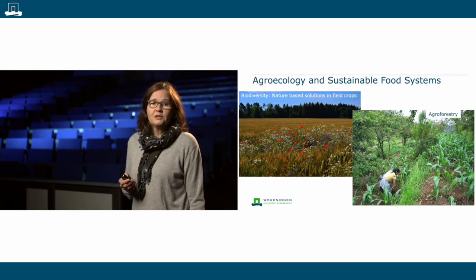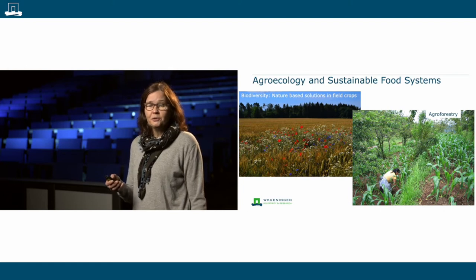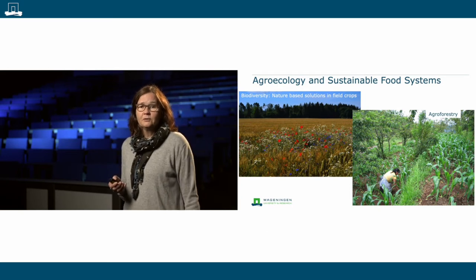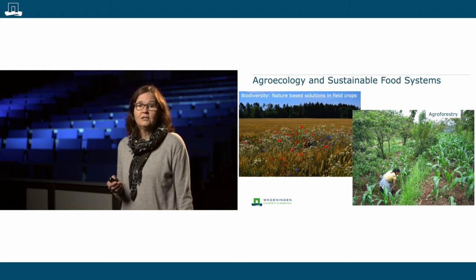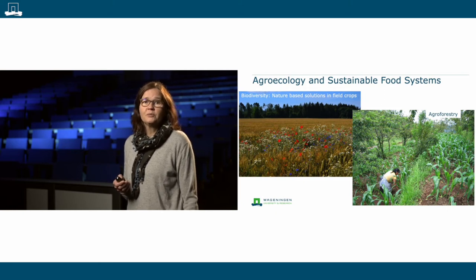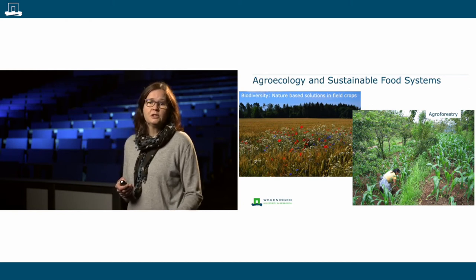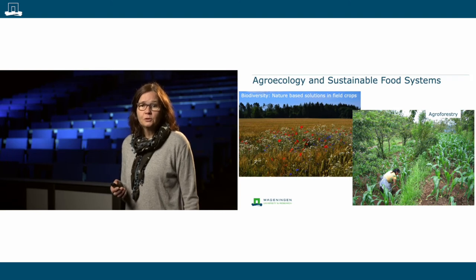Another form of sustainable agriculture is agroforestry. This is a relatively new perspective in Europe, but it has already been common practice for much longer in Asia and Africa. In agroforestry, trees and shrubs are combined with crops and pasture land. This fosters agricultural diversification and produces a wider range of products, including staple foods, fruits, nuts, and wood products. Such a system improves resource use efficiency.